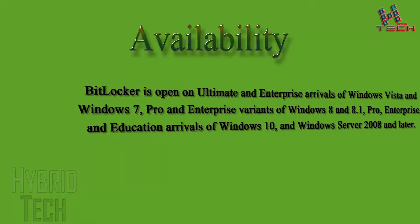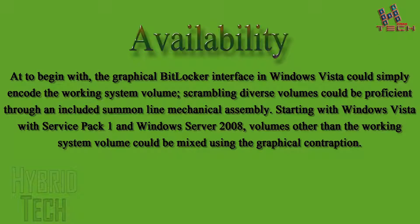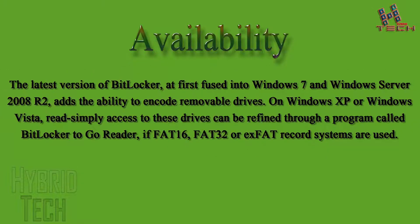BitLocker is available on Ultimate and Enterprise editions of Windows Vista and Windows 7, Pro and Enterprise variants of Windows 8 and 8.1, Pro, Enterprise, and Education editions of Windows 10, and Windows Server 2008 and later. Initially, the graphical BitLocker interface in Windows Vista could only encrypt the operating system volume; encrypting other volumes required a command-line tool. Starting with Windows Vista SP1 and Windows Server 2008, volumes other than the OS volume could be encrypted using the graphical interface.